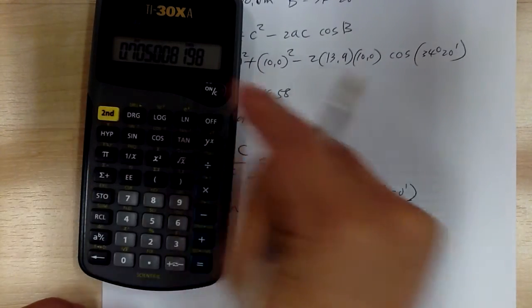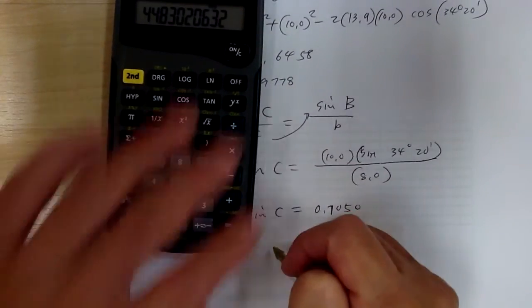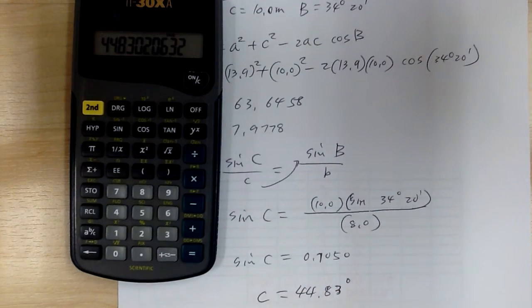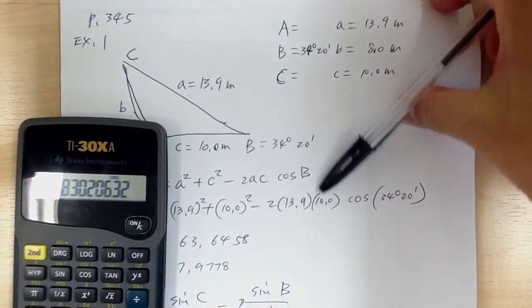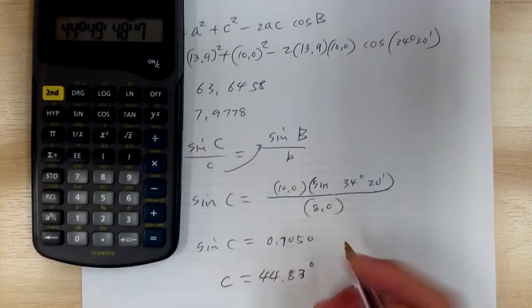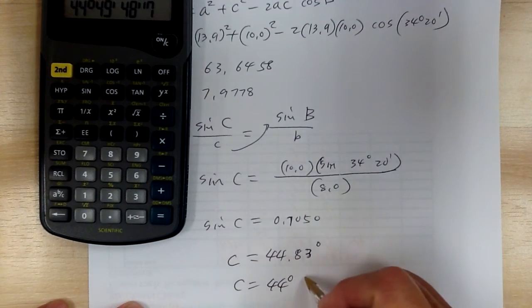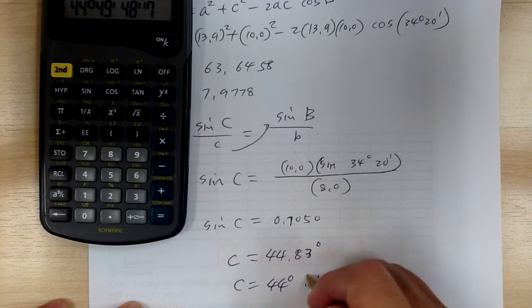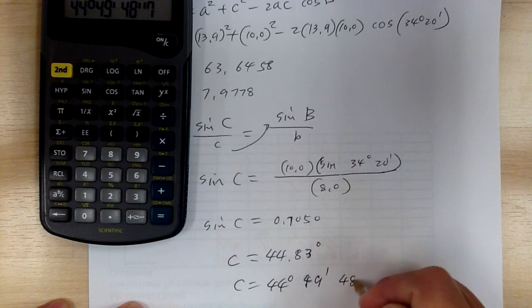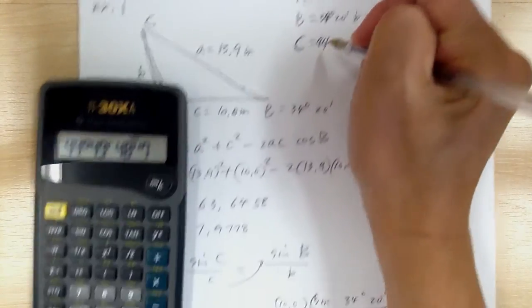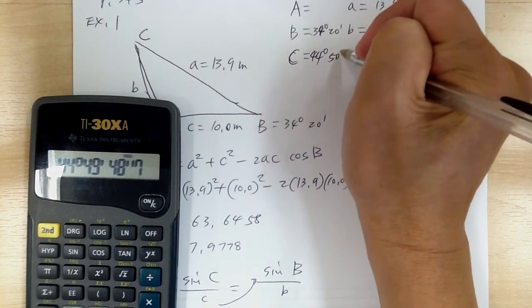Then you go second sine, so you're going to get angle C equal to 44.8 degrees or 83 degrees. Convert that into degrees, minutes, and seconds to follow the format given. So C equals 44 degrees 49 minutes 49 seconds — rounding off, that's 44 degrees 50 minutes.